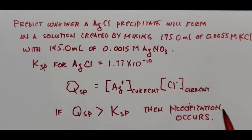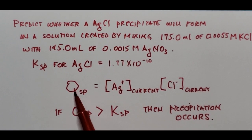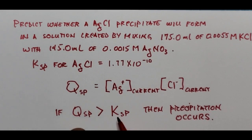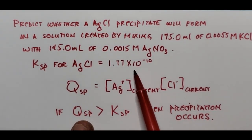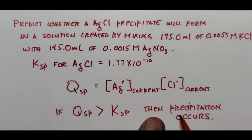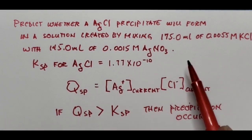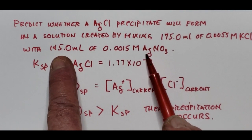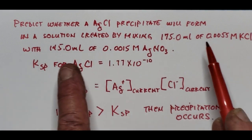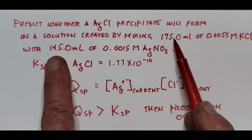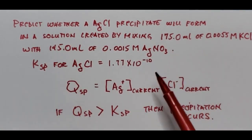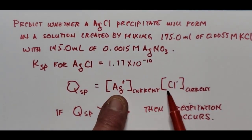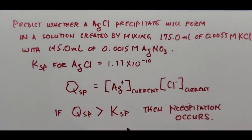We need total millimoles of silver and total millimoles of chloride, each divided by the new total volume of 320 milliliters. We find 0.218 millimoles of silver divided by 320 mL gives 6.8 × 10⁻⁴ M silver, and 0.963 millimoles of chloride divided by 320 mL gives 3 × 10⁻³ M chloride. The Qsp is then (6.8 × 10⁻⁴)(3 × 10⁻³) = 2 × 10⁻⁶, which far exceeds the Ksp of 1.77 × 10⁻¹⁰ — so yes, precipitation occurs.